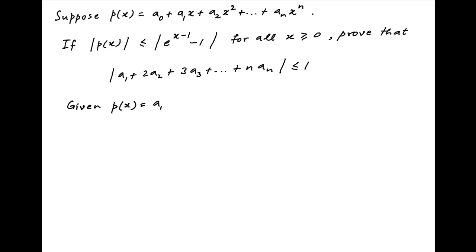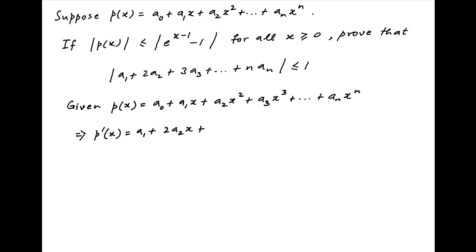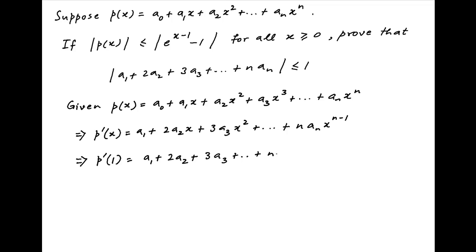p(x) is equal to a0 plus a1x plus a2x squared plus and so on plus an times x raised to the power n. Taking the derivative of both sides with respect to x, we get p'(x) is equal to a1 plus 2a2x plus 3a3x squared plus and so on plus n times an times x raised to the power n minus 1. Now put x equal to 1: we get p'(1) is equal to a1 plus 2a2 plus 3a3 plus and so on plus n times an. Take the modulus of both sides — let's call this Result 1.